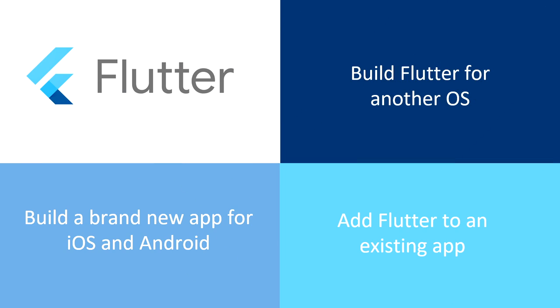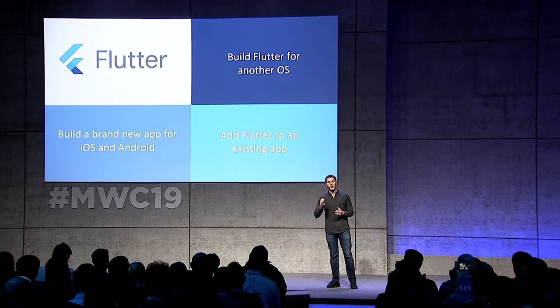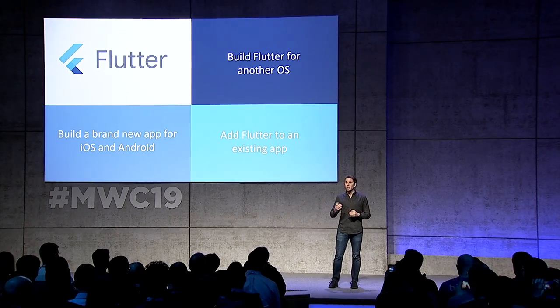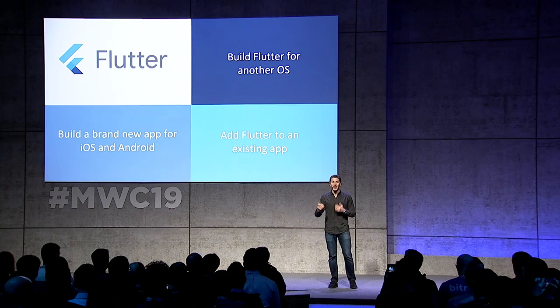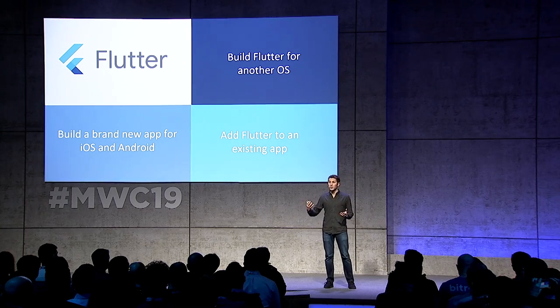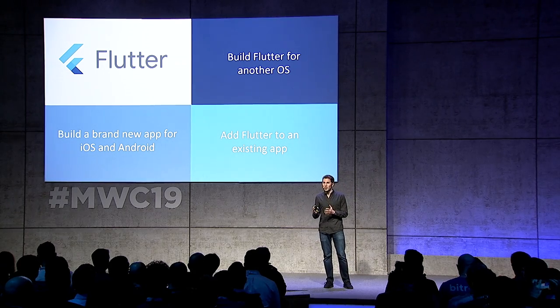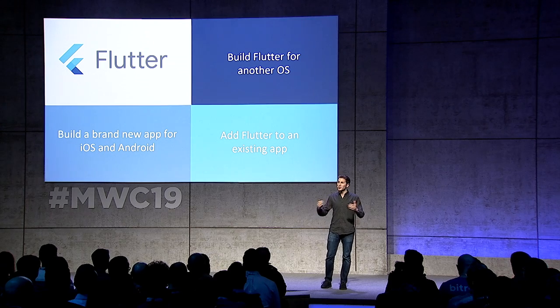All the apps you saw use Flutter, but in different ways. There are three common ways people are using Flutter today. The first is to build a brand new app from scratch — if you have an idea or an app you want for your business, you develop it in one place and it ships natively on all platforms. The second way is to build Flutter for the other OS: if you already have an iOS or Android application and want to build the other one to reach more users, you can build it with Flutter and get it out quickly, eventually merging the code bases.